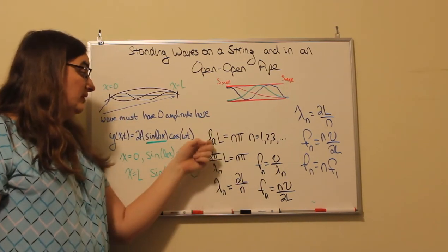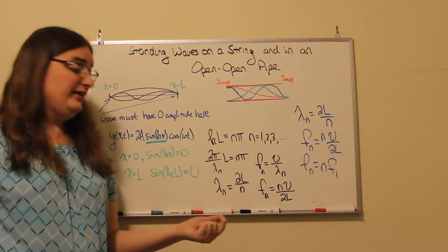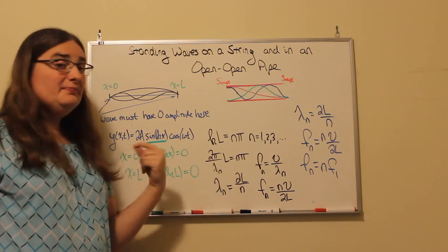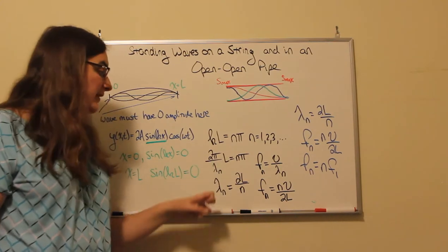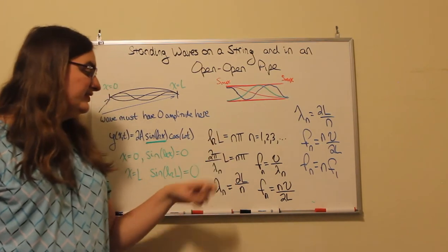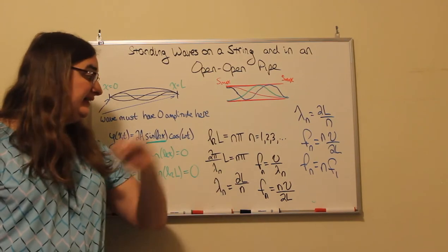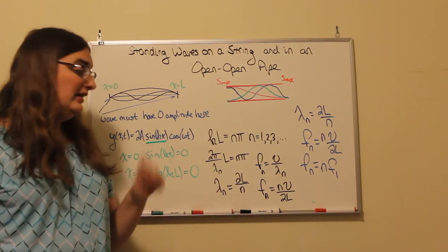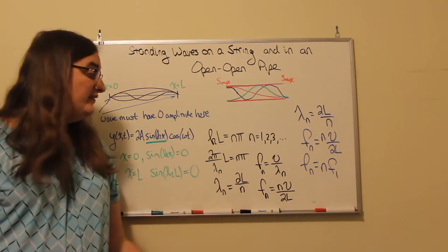The wave number k is two pi divided by the wavelength. So that means there need to be allowed wavelengths based off this integer n. And that pi cancels out. So two times the length of the string divided by my allowed wavelength is equal to an integer. So my allowed wavelengths are two times the length of the string divided by an integer.